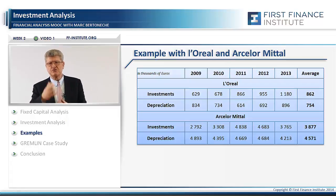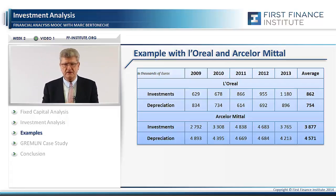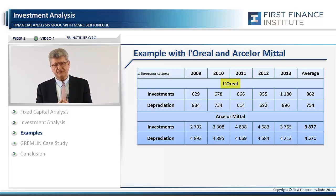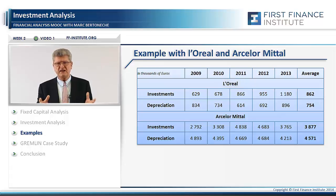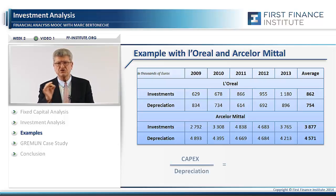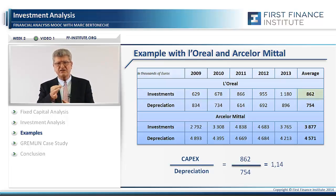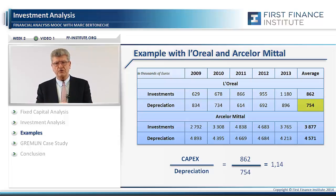Let's take an example using two companies from week one to illustrate this point. L'Oréal, the cosmetics company, had growth essentially in volume of 10% between 2011 and 2012. L'Oréal needs to invest rather heavily to feed that growth in emerging markets, and you can see that the ratio of capital expenditure over depreciation is higher than one. On average over the period, 862 capex divided by depreciation 754 is equal to 1.14.